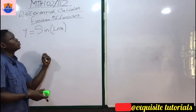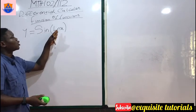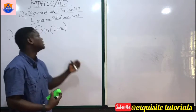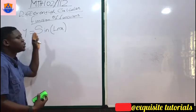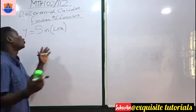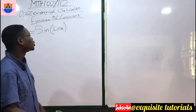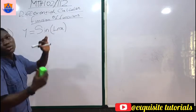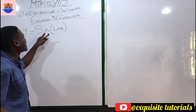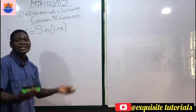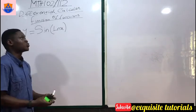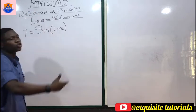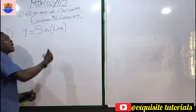It's also possible to have a logarithmic function inside an exponential function and everything inside a trig function, or a normal linear equation or parabola inside a logarithmic function and everything inside a sine function. There are as many combinations as possible — that's what we call functions of functions.